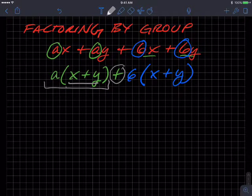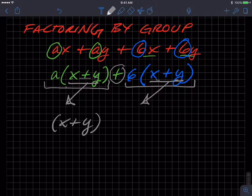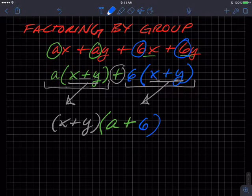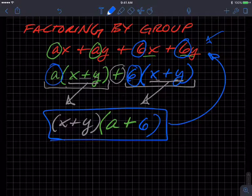So a is a factor, and x plus y is a factor of this first term. This is now a big giant term separated by this plus sign from this big term. x plus y is a factor over here. So we can actually factor away x plus y from both of these two terms. So if I factor x plus y from both those terms, I'm left with a plus 6. And so I get this binomial. When I multiply these two binomials, I get this crazy thing up here. That's factoring by grouping.